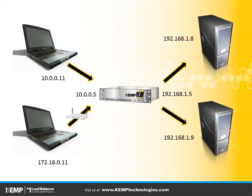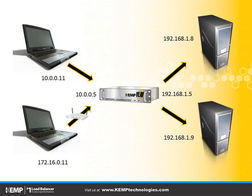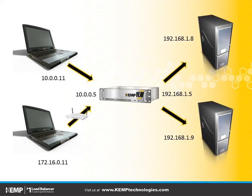As clients connect to the virtual service, they still connect the way they connected before — they connect to 10.0.0.5. But when the traffic is sent from the Loadmaster after processing to the servers, it uses a different interface to connect to the servers: 192.168.1.8 and .9. When the servers respond, the traffic comes back to the Loadmaster, and the Loadmaster then passes it back on to a respective client. So that explains the difference in working with two ARM versus one ARM virtual services.